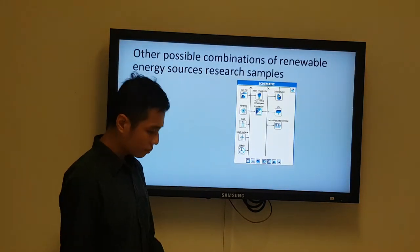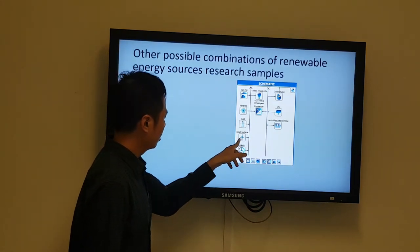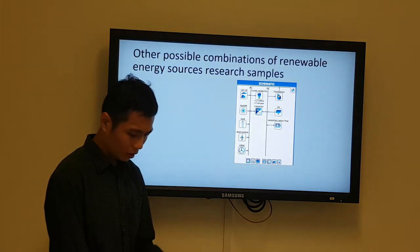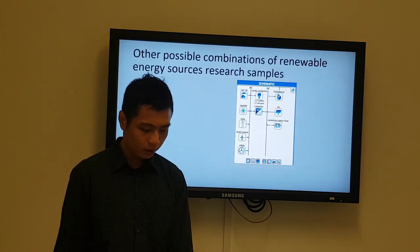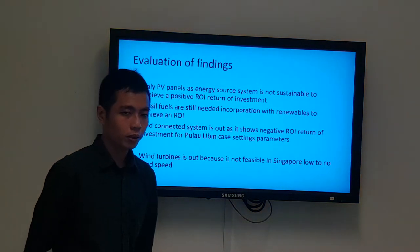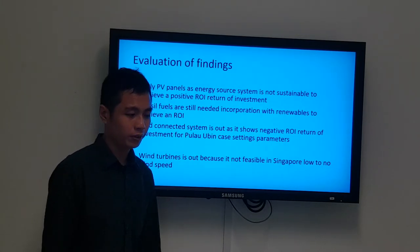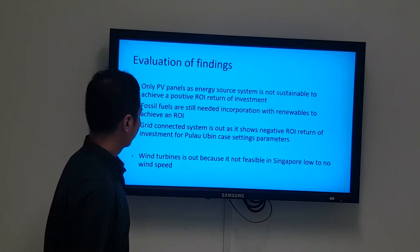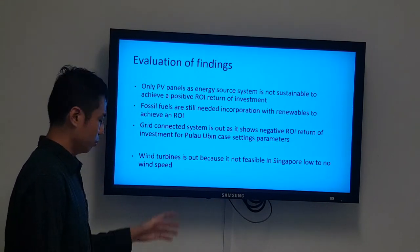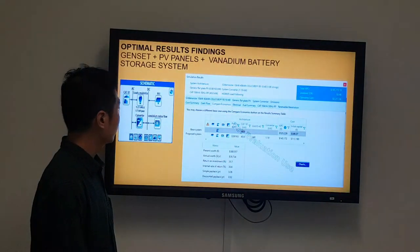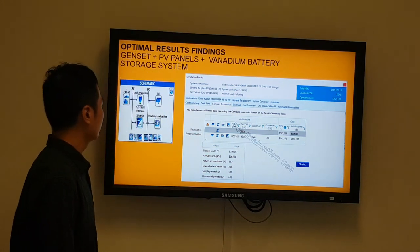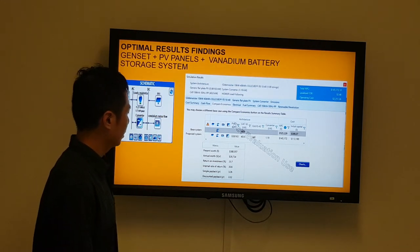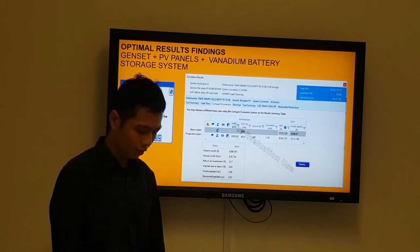Other possible connections on the software include hydroelectric, wind turbine, grid, electrolyzer with dispenser, battery, and solar panels. From all simulation tests, only PV panels to generate all energy needs is not sustainable, grid-connected gives negative ROI, and wind turbine is not viable in the Singapore context. The best optimal settings are the combination of generator sets, PV, and vanadium flow battery banks, which gives a return on investment of approximately 24%.